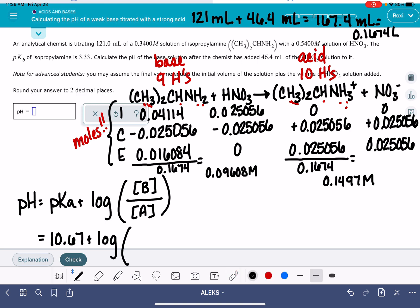So let's take the molarity of our base, 0.09608, and the molarity of our acid, 0.1497, and we'll figure this out. 0.09608 divided by 0.1497, take the log of that number and then add that to 10.67. And I get a pH of 10.48.